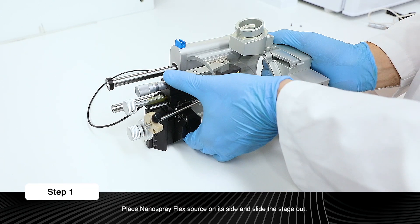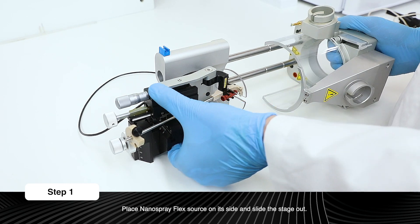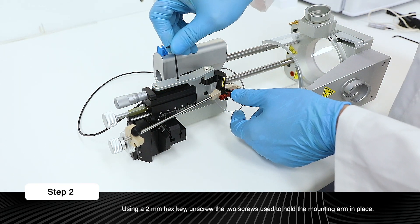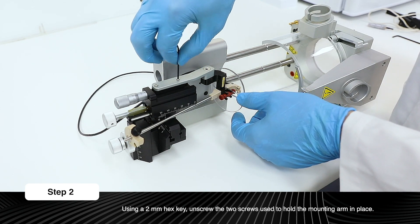Place the Nanospray Flex Source on its side and slide the stage out. Using a 2mm hex key, unscrew the two screws used to hold the mounting arm in place.